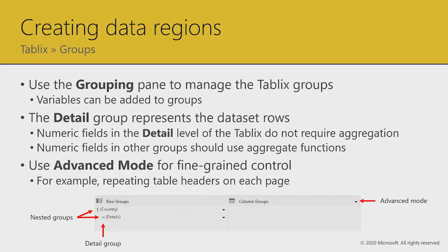A discussion now about the grouping of a tablix. Remember, there's a grouping pane beneath the report canvas. Variables can also be defined for groups as well. There's a detail group that represents the lowest granularity of data retrieved by your dataset, and it's possible to add groups that provide summarization at higher levels. The grouping pane also has an advanced mode, giving you fine-grained control over how rendering of the grid will take place — important if your table is going to overflow to multiple pages, to configure how groupings or headers should repeat on a new page.